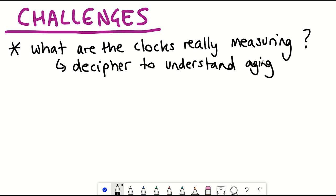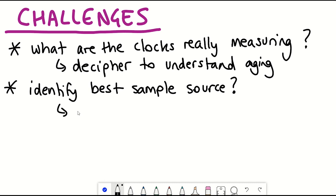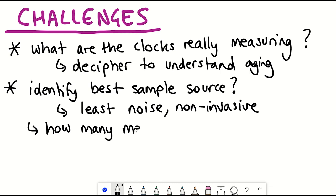But that isn't the only challenge that the aging clocks face at the moment. The second one is trying to identify the best sample source. And going back to what I was saying earlier about the noise in the data being both technical and biological, as for example, doing the test at different times of the day could give different readings, albeit that information in itself could be quite interesting to understand. And so that goes in line with how many measurements would be needed for a precise measurement. Would you have to take three and get an average? Or would one suffice?